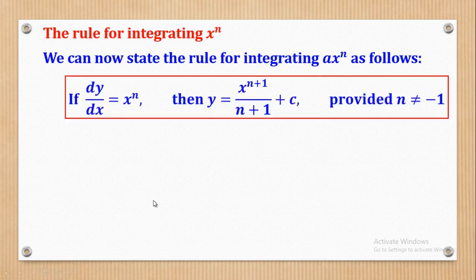The rule is that if dy/dx is equal to x to power n, then y will be equal to x to power n plus 1, over n plus 1, plus a constant C. So the power increases by 1, then you divide by the new power. The power initially was n, now increased by 1 to become n plus 1, everything divided by the new power which is n plus 1. After that, remember to add a constant C.